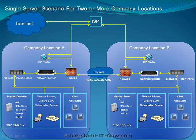Ideally, but not necessary, you'd want to have a member server at your secondary location that would duplicate the primary domain controller's functions to allow faster connections for printers, files, and network directory services for maintaining users. That is the second scenario of the single server with two or more company locations.